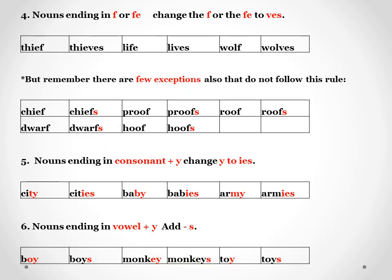Next, we move on to nouns ending in F or FE. Here you will have to change F or FE to VES. For example, thief becomes thieves, life becomes lives, wolf becomes wolves. But remember there are a few exceptions that don't follow any rules: chief takes chiefs, proof takes proofs, and roof takes roofs.